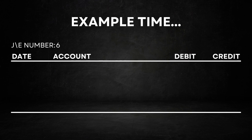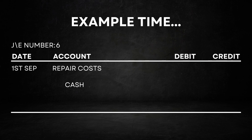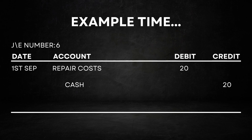The journal entry date will be the 21st of September, as that is when the equipment was fixed. Therefore, this transaction will appear in the September accounting period. Next, we identify the accounts impacted: repair costs and cash. Repair costs is an expense account — the E in DEALER — and debits increase expenses. Since the repair shop charges $20, we record this amount in the debit column for repair costs. Cash is an asset account — the A in DEALER — and credits decrease assets. We indent the account description for cash and enter $20 in the credit column. Lastly, we provide a description: repair costs week 1. Now that our journal entry is complete, it's ready to be posted in the general ledger.